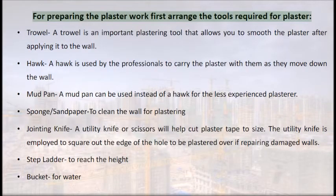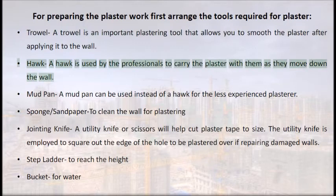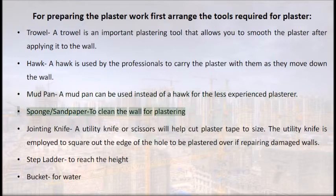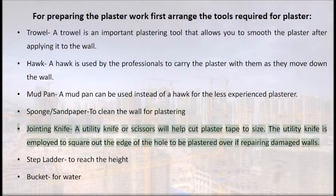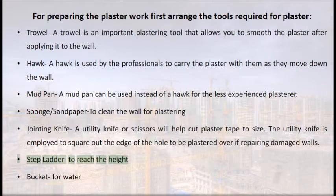Tools required for plaster work include: a trowel — an important plastering tool that allows you to smooth the plaster after applying it; a hawk — used by professionals to carry plaster as they move down the wall; a mudpan — used instead of a hawk for less experienced plasterers; a sponge or sandpaper to clean the wall; a jointing knife to cut plaster tape and square out holes; a step ladder to reach height; and a bucket for water.